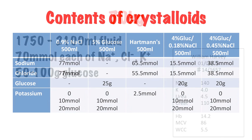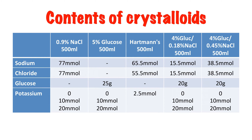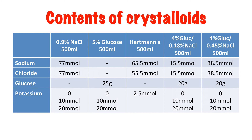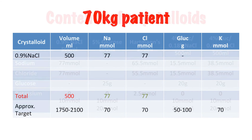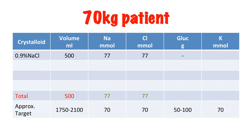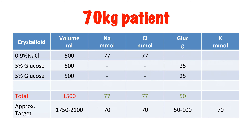Now let's look at the content of common fluids we have available. If we look at a 500 ml bag of 0.9% sodium chloride, it contains 77 millimoles of sodium and 77 millimoles of chloride. Considering that we don't really need more than 70 millimoles of sodium or chloride for 24 hours on this patient, it's already fairly clear that we shouldn't be giving much more than one 500 ml bag of saline for maintenance. A 500 ml bag of 5% glucose contains 25 grams of glucose. Since we need between 50 and 100 grams of glucose per day, and still have between 1,250 and 1,600 ml of fluid left to give, we can prescribe three 500 ml bags of 5% glucose.